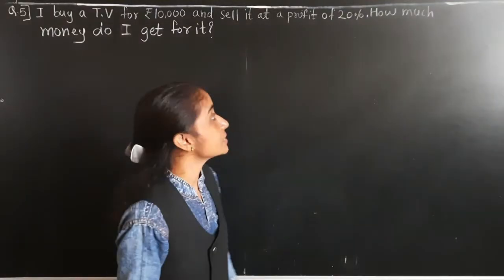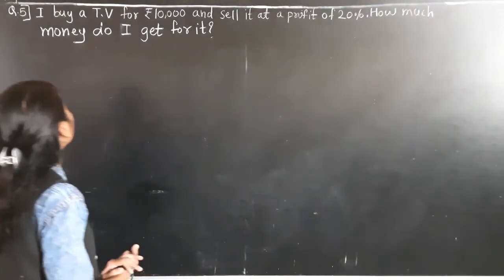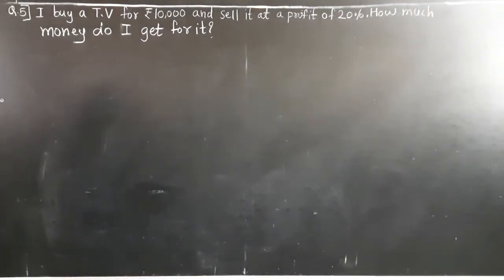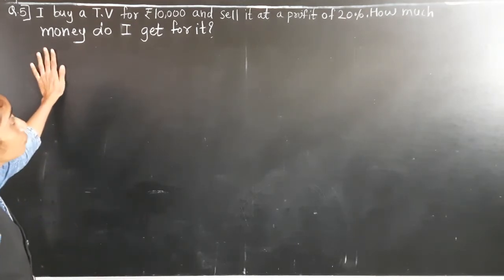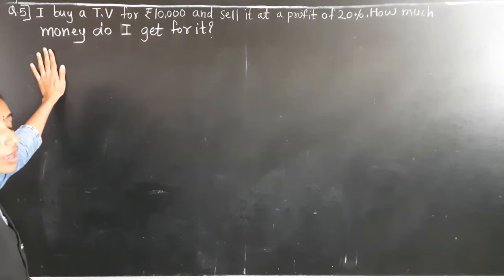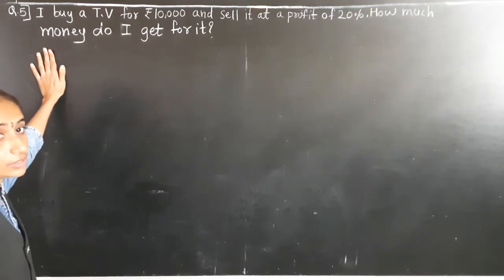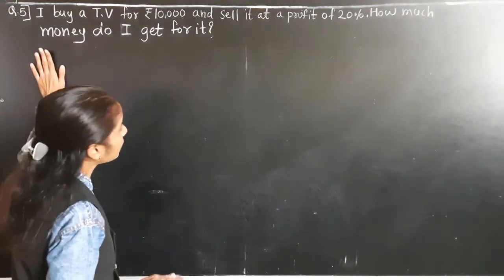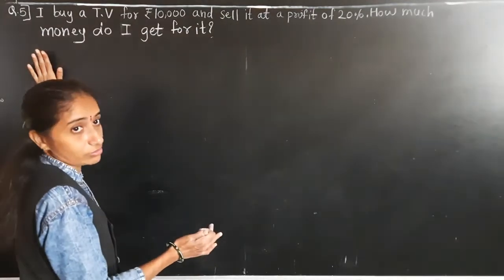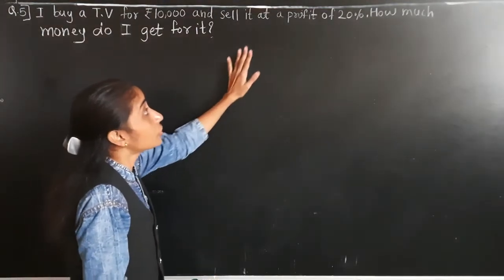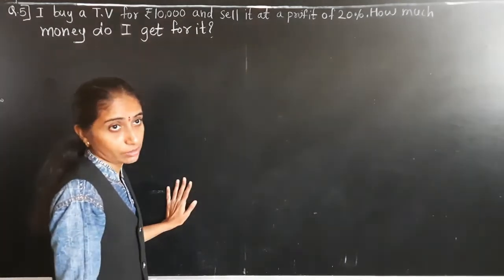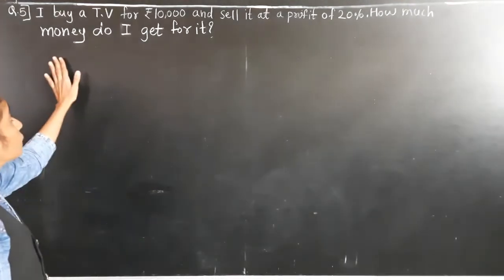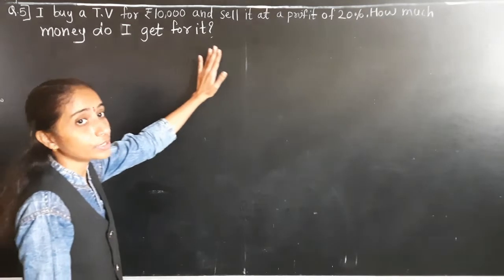Good morning students. Let's learn today exercise 8.3, question number 5. I buy a TV for rupees 10,000 and sell it at a profit of 20%. So how much money do I get for it?